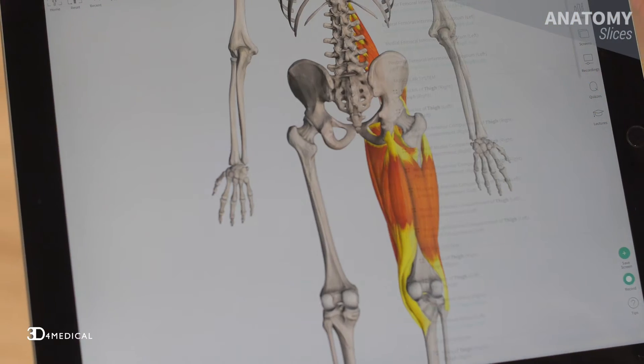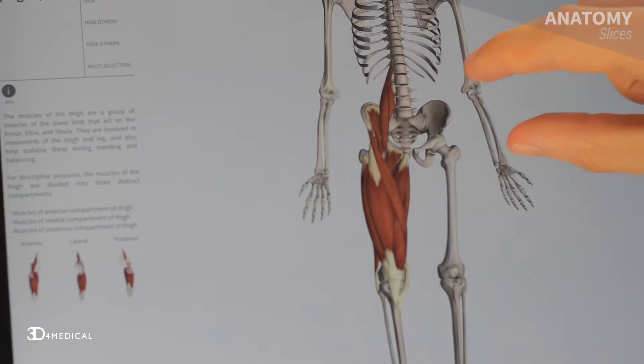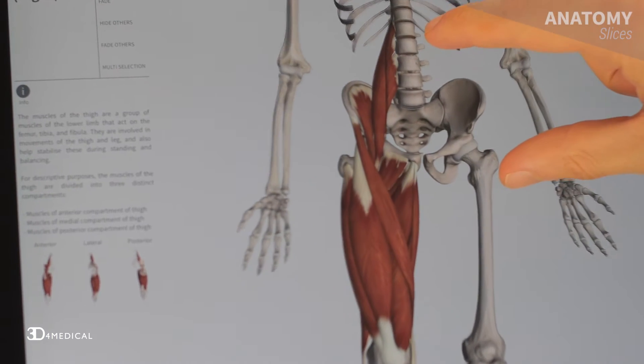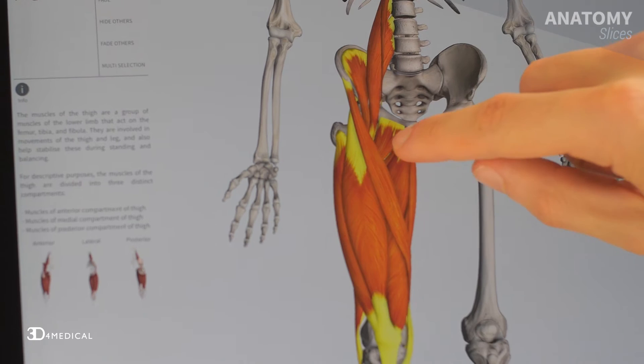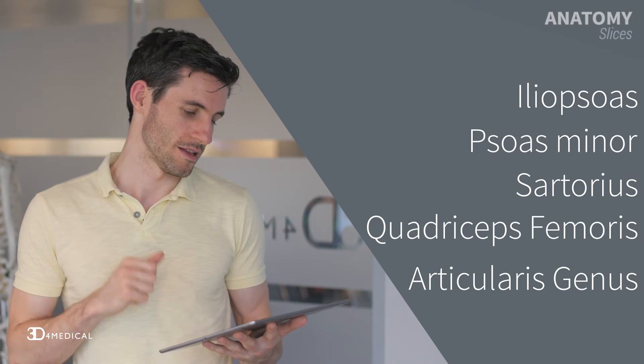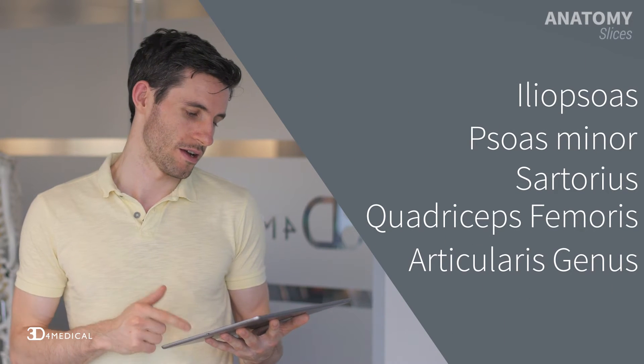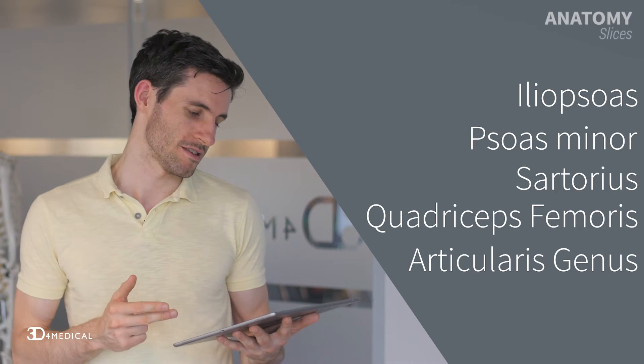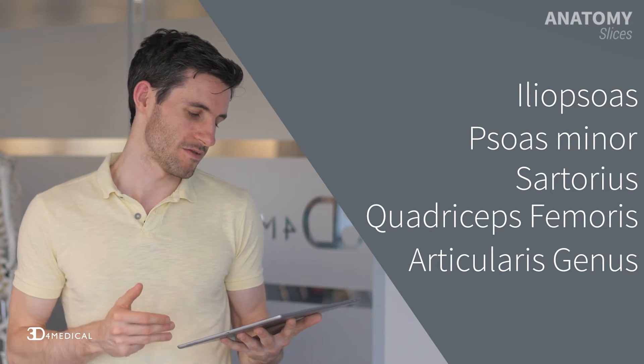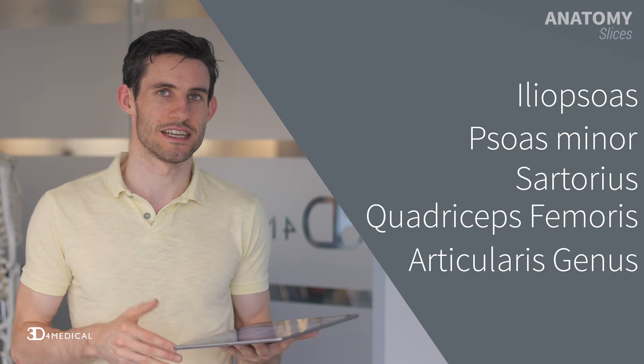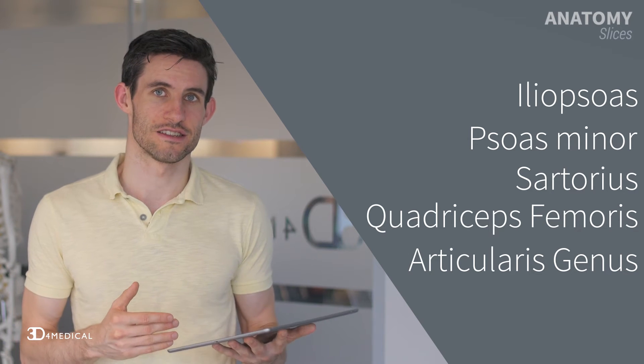We can see it's got five different muscles: the iliopsoas, the psoas minor, sartorius, quadriceps femoris, and articularis genus.